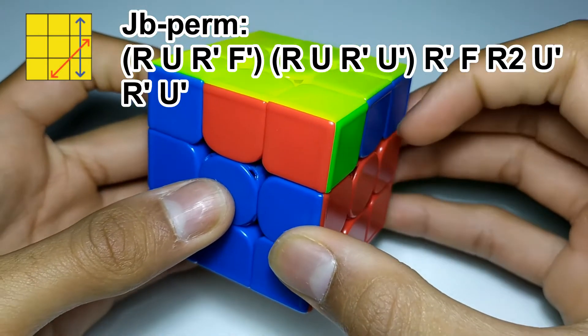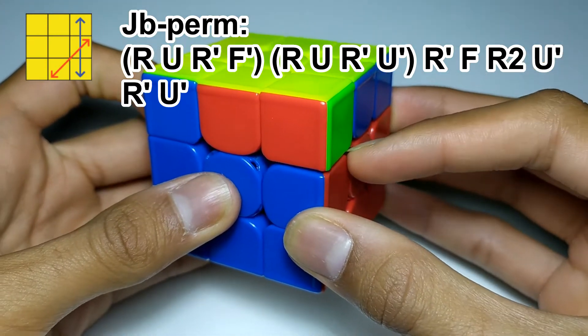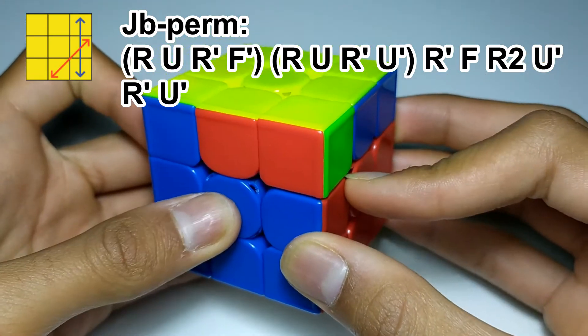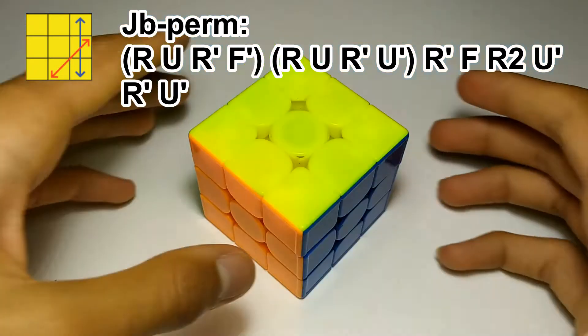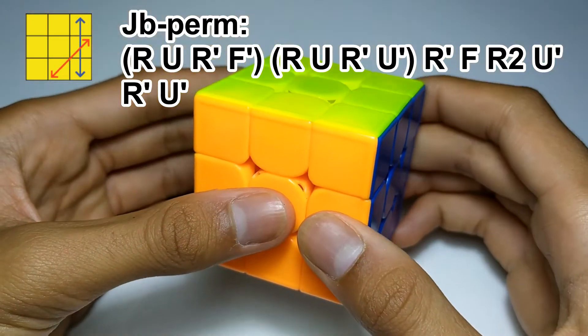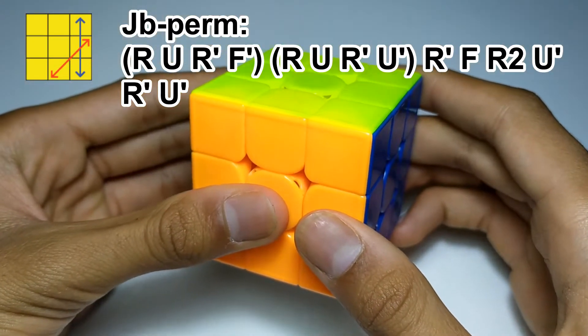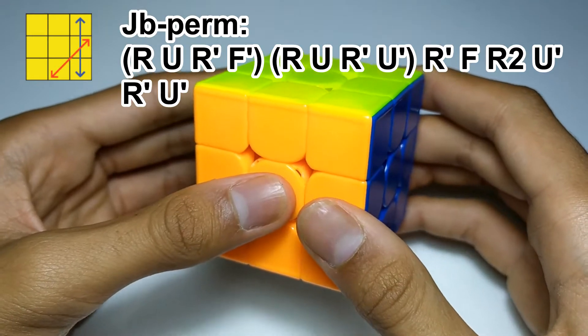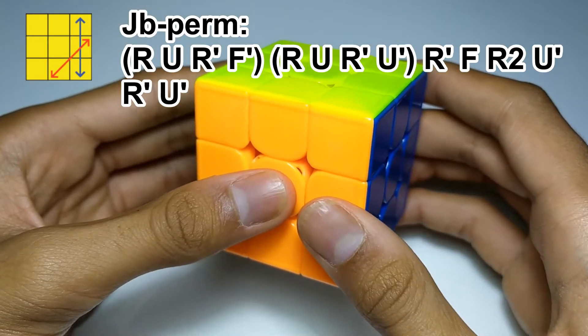So, the second way uses no re-grips, whereas the first way uses two. Now, you'll probably find that the way of doing the algorithm with the re-grips allows you to turn faster, but it's actually slower overall.